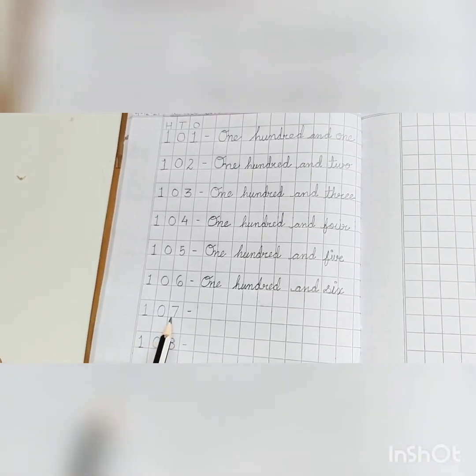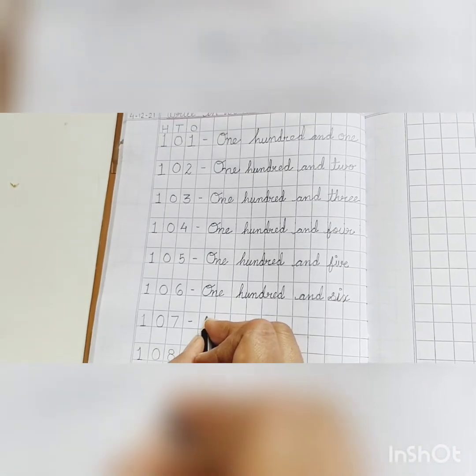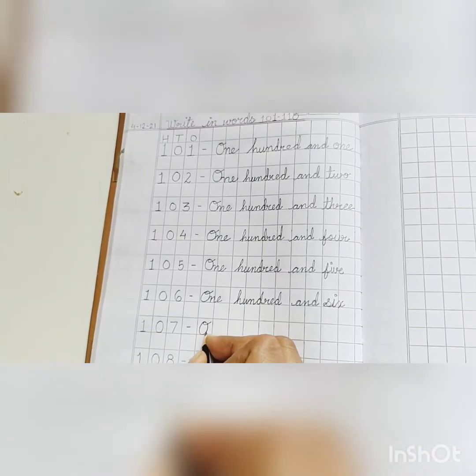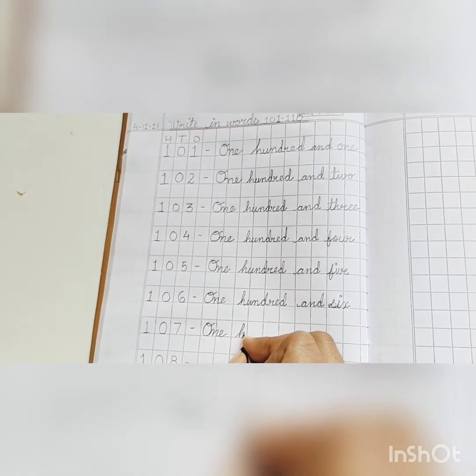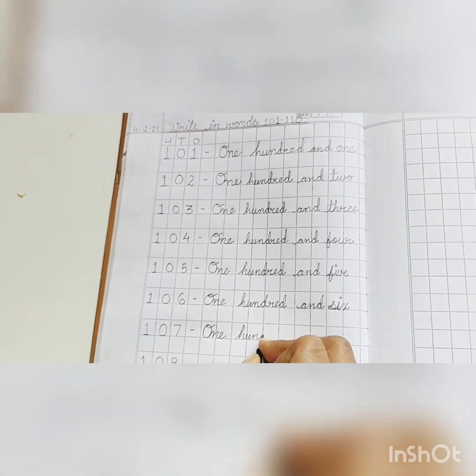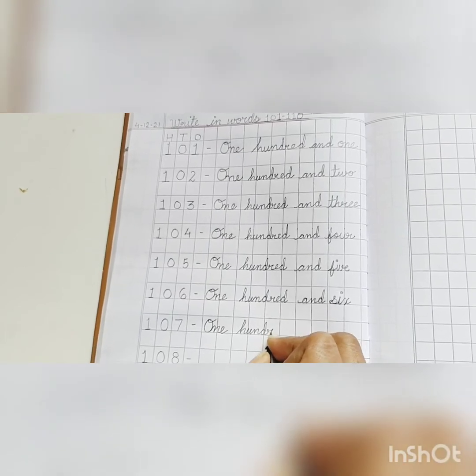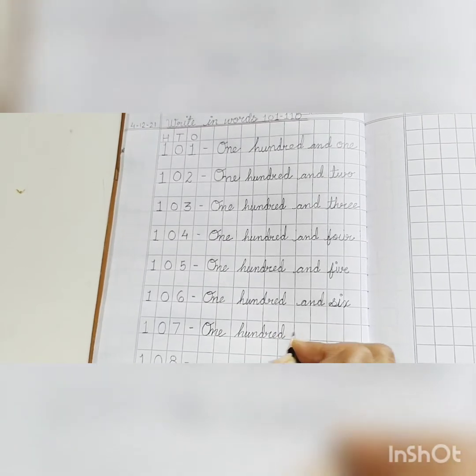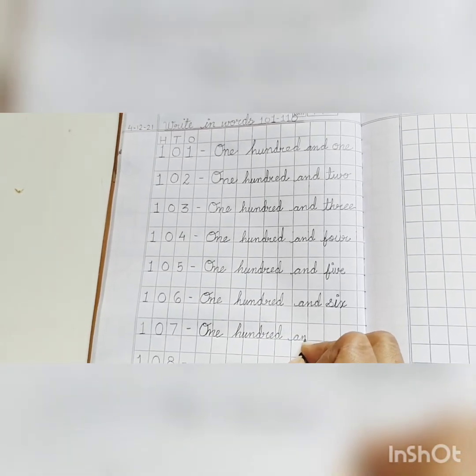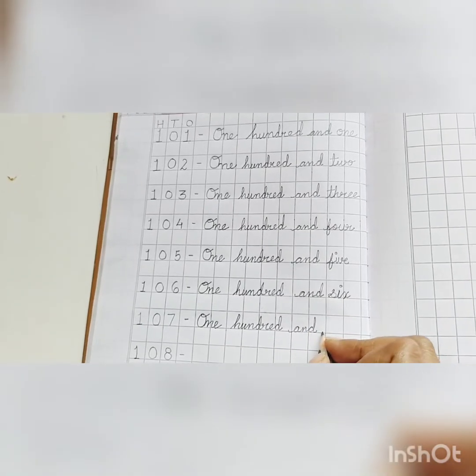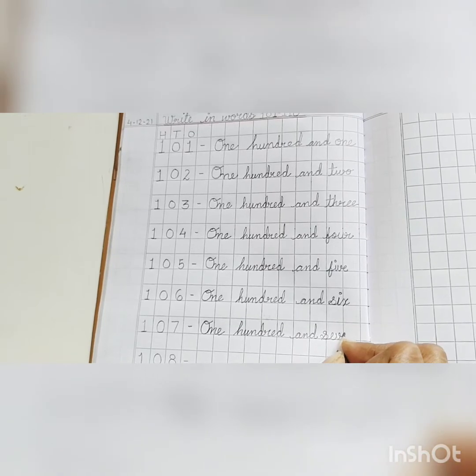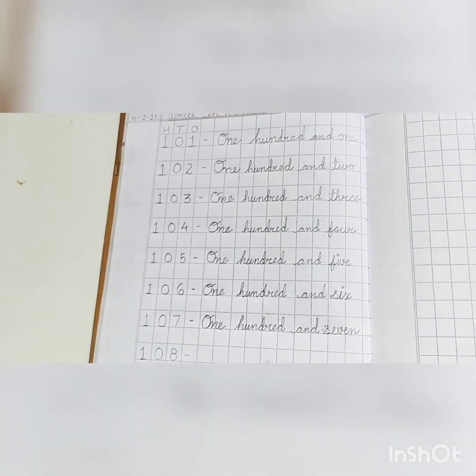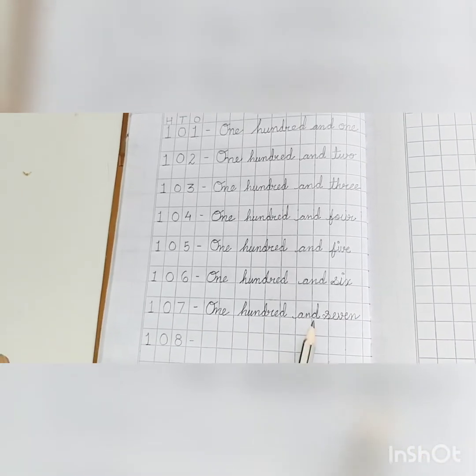Next, 107. Let's write, O-N-E, 1, H-U-N-D-R-E-D, 100, A-N-D and S-E-V-E-N, 7, 107.